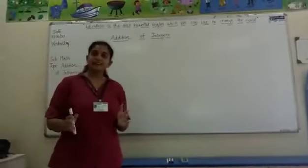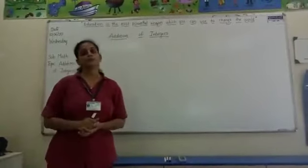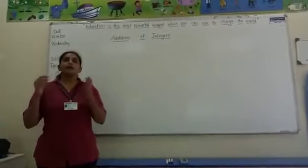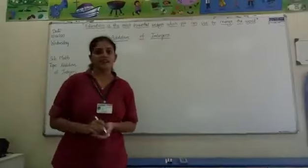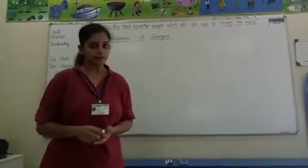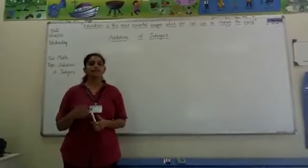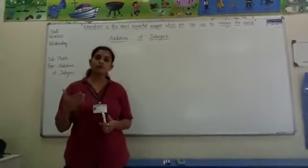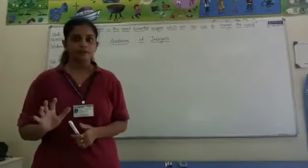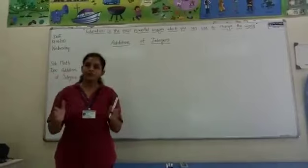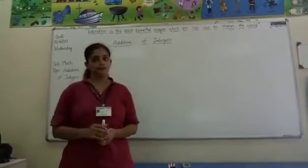Integers are a set of numbers, but which set of numbers? Now if I ask any child to tell me the numbers, the child always starts with 1, 2, 3, 4 and goes on. This set of numbers is called natural numbers.